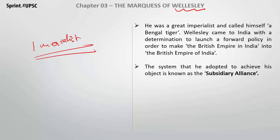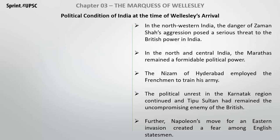The system Wellesley adopted in order to gain his objective was the Subsidiary Alliance System — that was a very excellent move on his behalf in order to acquire territory in India. First, we know what the political conditions were: in northwestern India there was war, in north and central India there were the Marathas, there was a French army in India, and in the Carnatic there was unrest under Tipu Sultan. The French threat from outside also caused the British statesmen some fear.